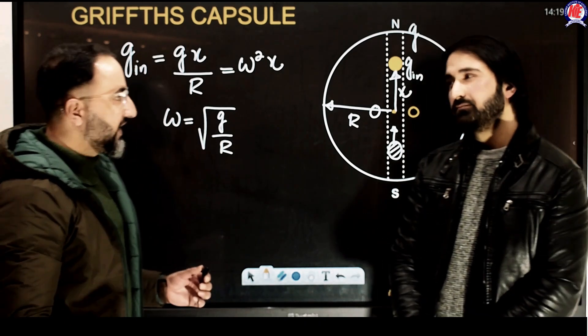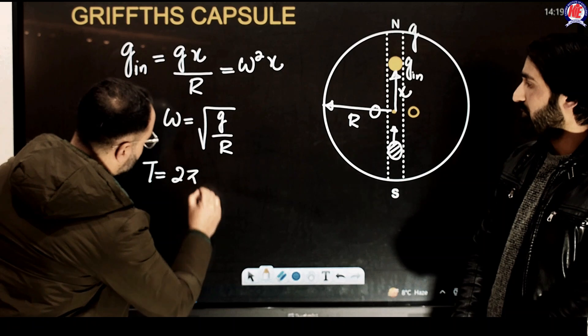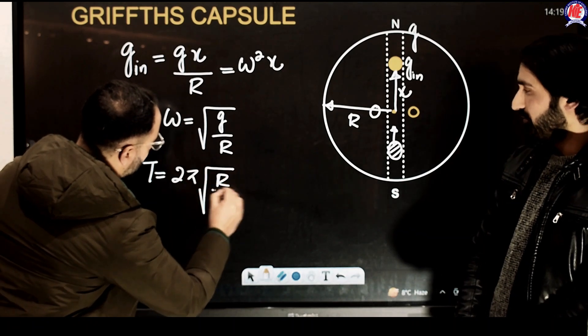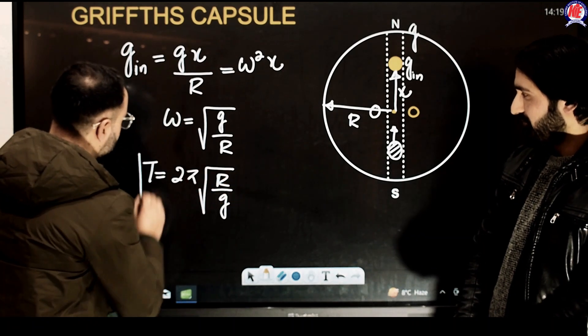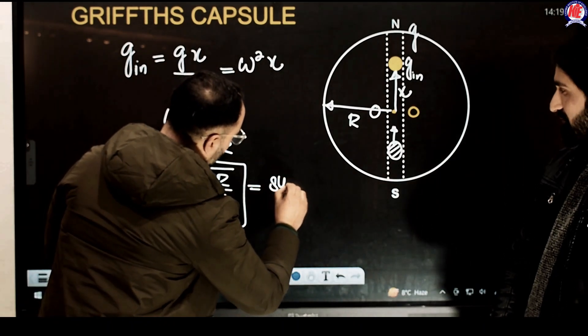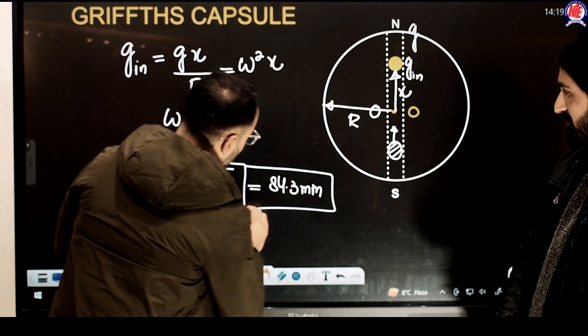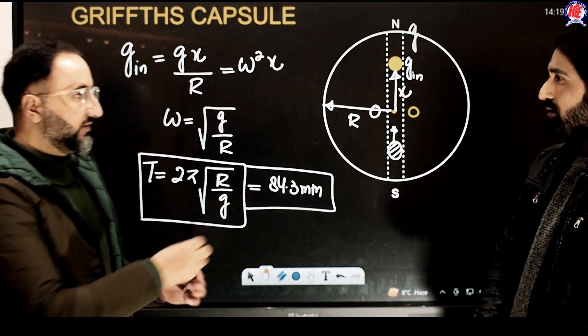Easily we can calculate the time period. The time period will be equal to 2π by omega which comes out to be 2π under root of r divided by g. And if you calculate the value of this, that is exactly 84.3 minutes. Hence, we are done with the time period of this particle.